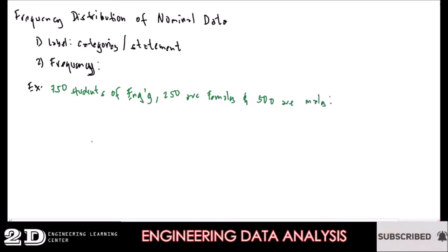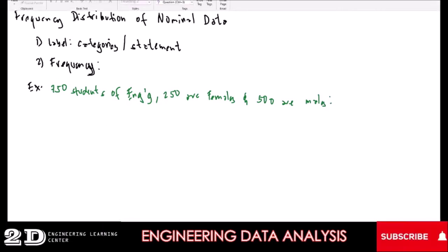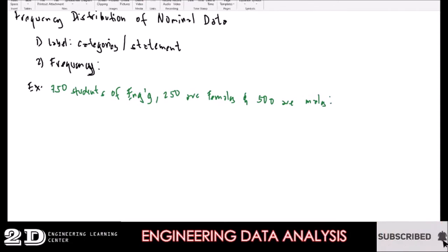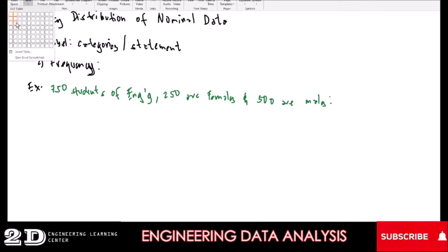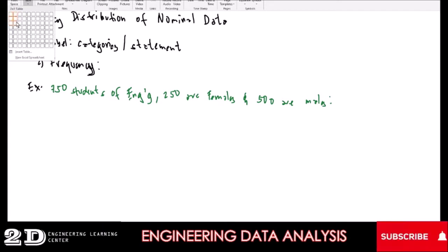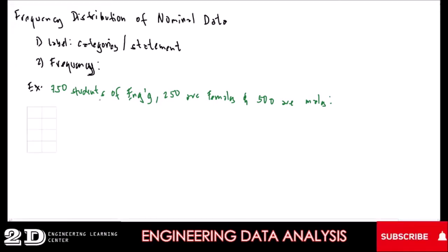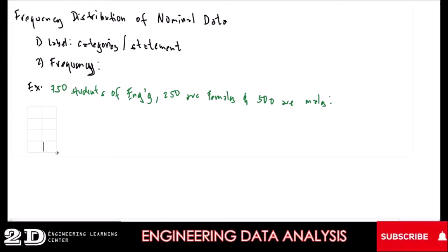If you are going to have a frequency distribution of this data, let's draw the table. Our table will consist of two columns and three rows.